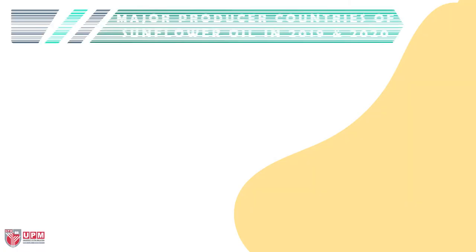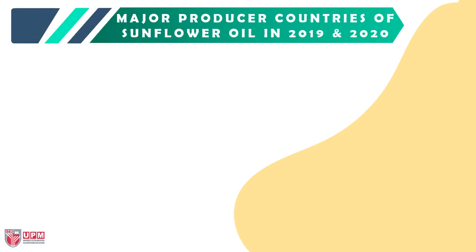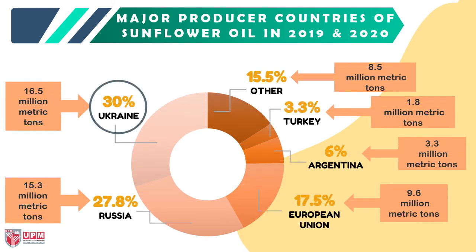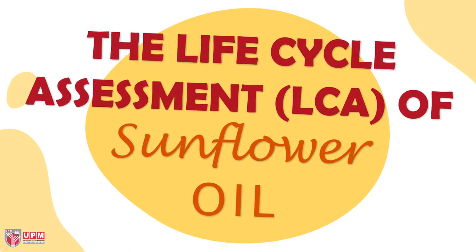Looking at the major producer countries in 2019–2020: Ukraine produced the highest amount of sunflower oil at 16.5 million metric tons or 30 percent. Other countries besides Russia, the European Union, Argentina, and Turkey produced sunflower oil totaling 8.5 million metric tons or 15.5 percent.